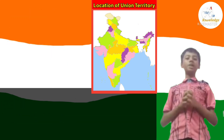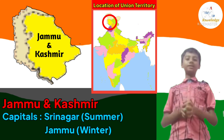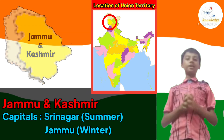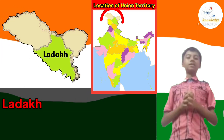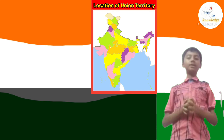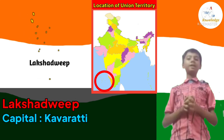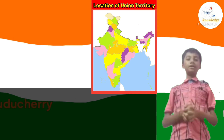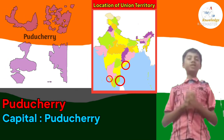UT number 5: Jammu and Kashmir. It has two capitals — Srinagar is the summer capital and Jammu is the winter capital. UT number 6: Ladakh. Its capital is Leh. UT number 7: Lakshadweep. Its capital is Kavaratti. UT number 8: Puducherry. Its capital is also Puducherry.